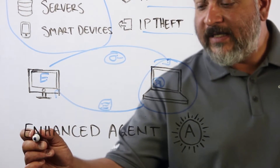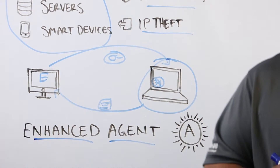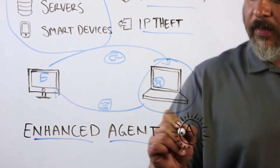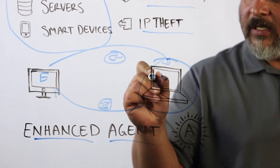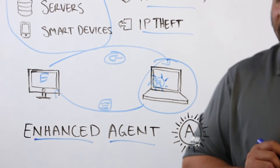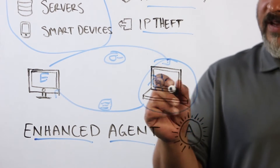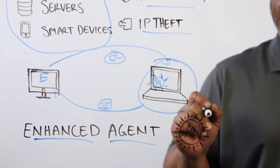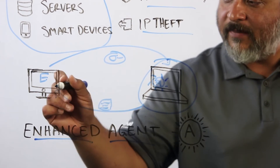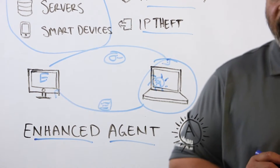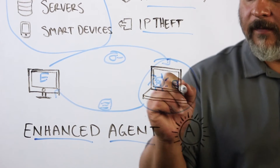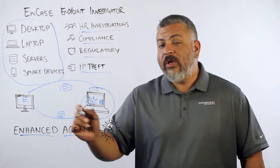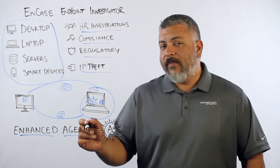So what we've introduced is this enhanced agent. Now the investigator can go ahead and create that search criteria, and instead of a standard collection, it pushes out this enhanced agent to the endpoint — to Ted's laptop. Even when Ted disconnects from the network, the enhanced agent will search the laptop and collect anything that's responsive. Instead of trying to send it back to the investigator software immediately, it stores that information locally. So the next time Ted connects to the network, the files can be collected and you can complete that investigation.